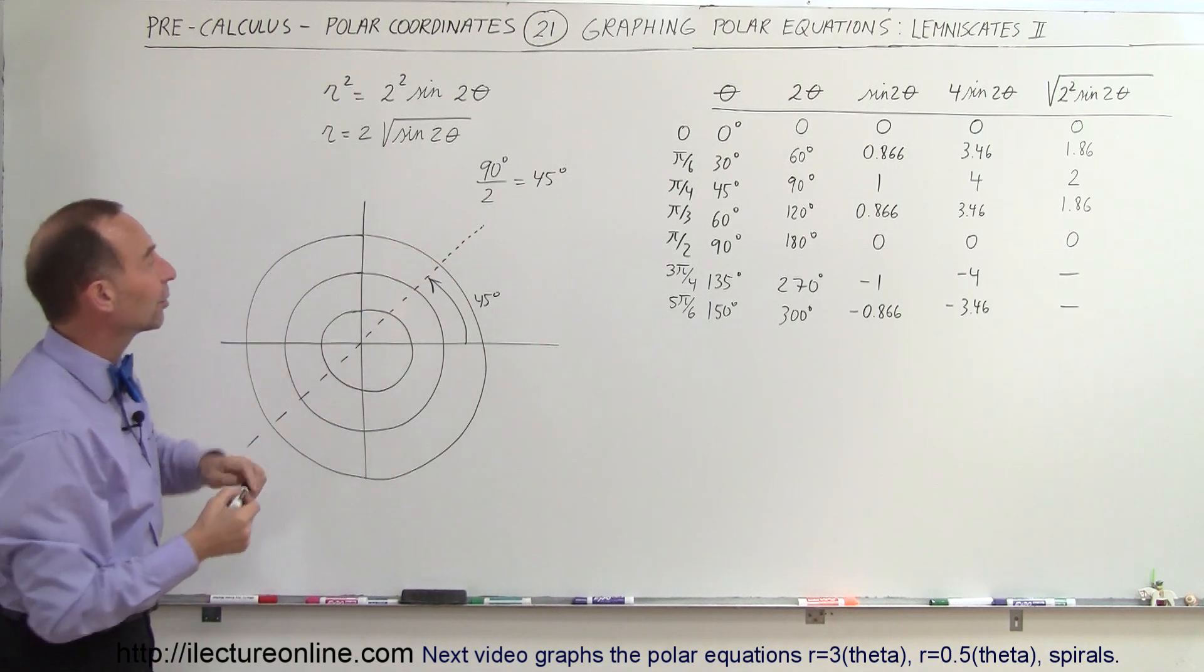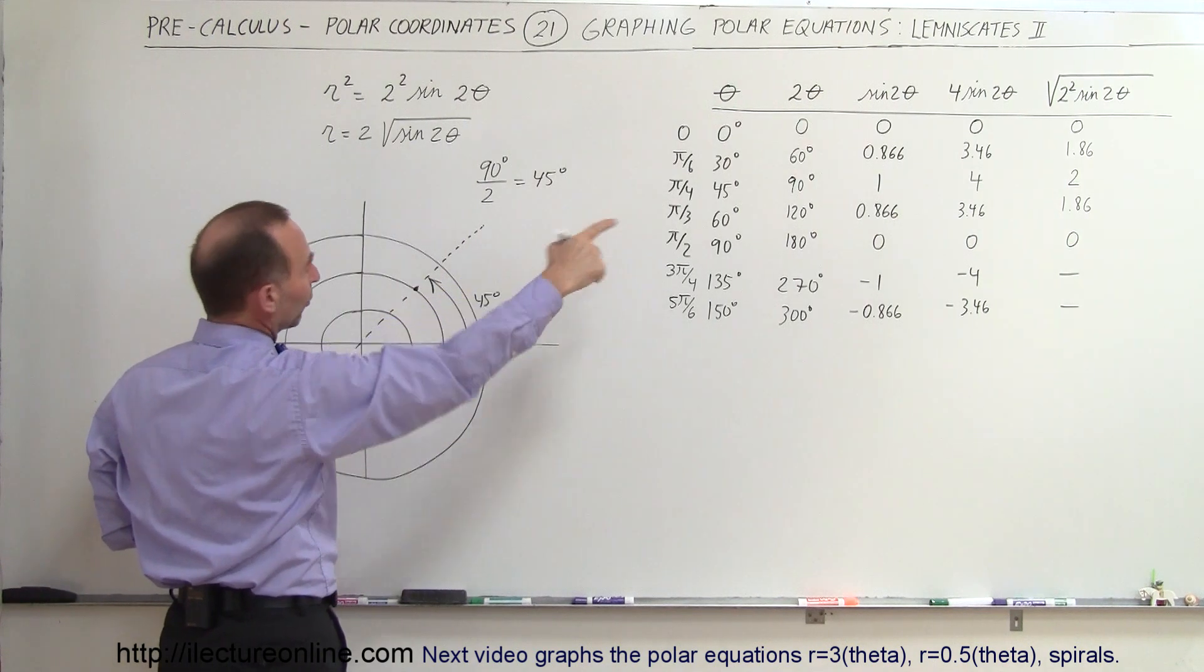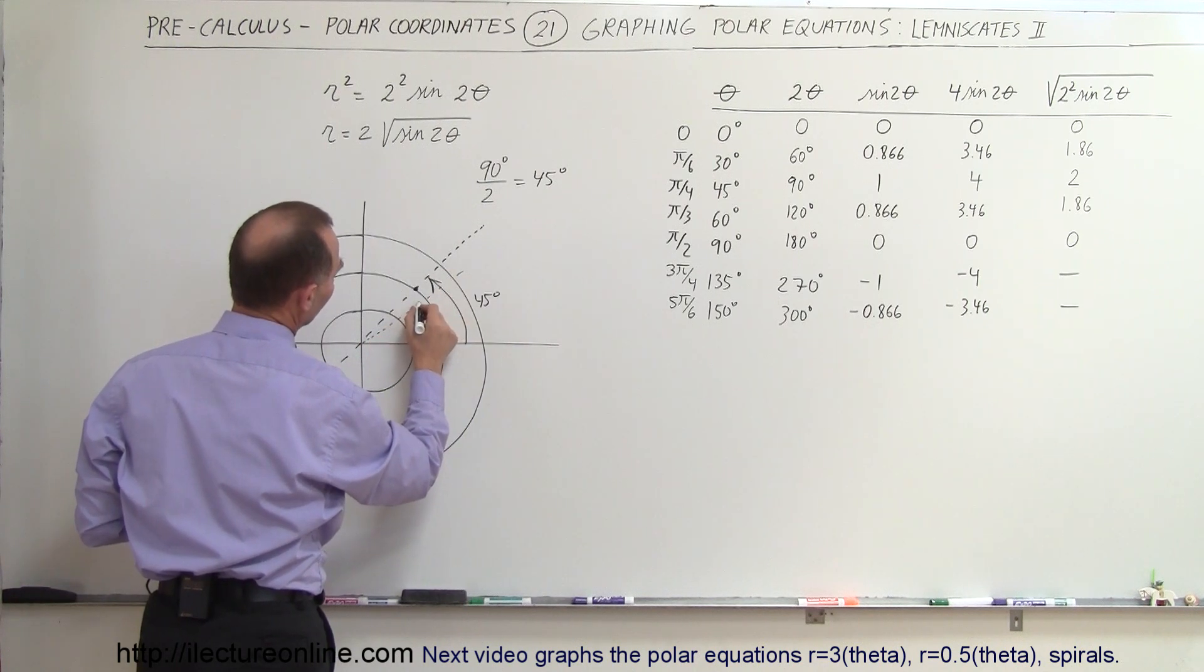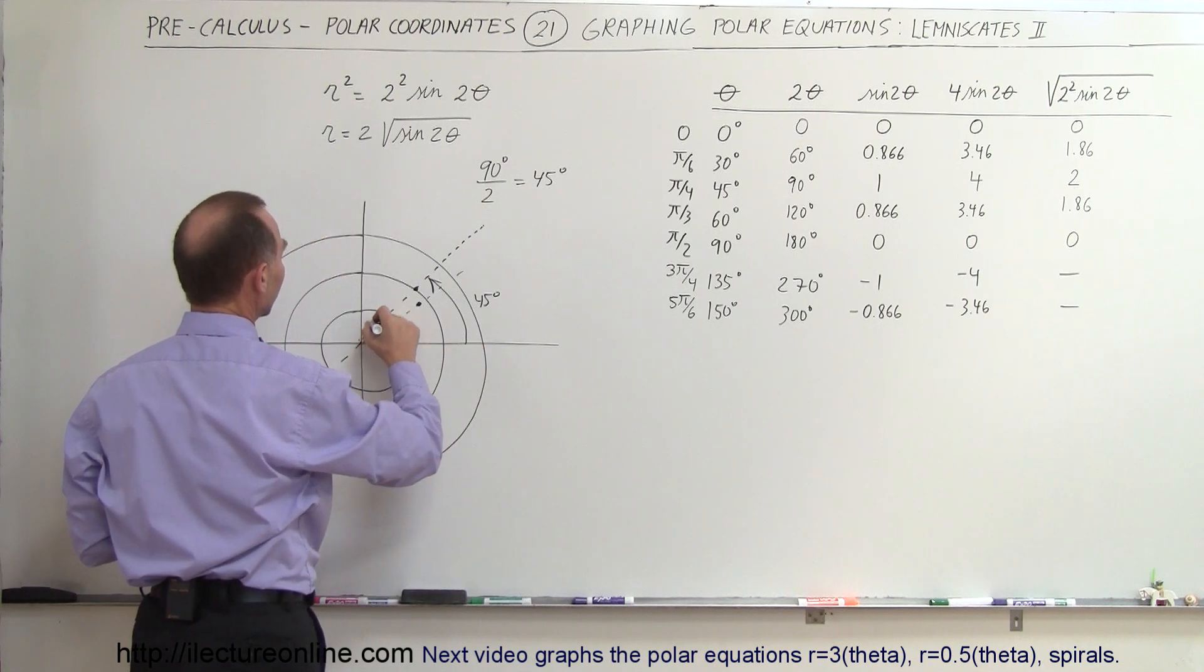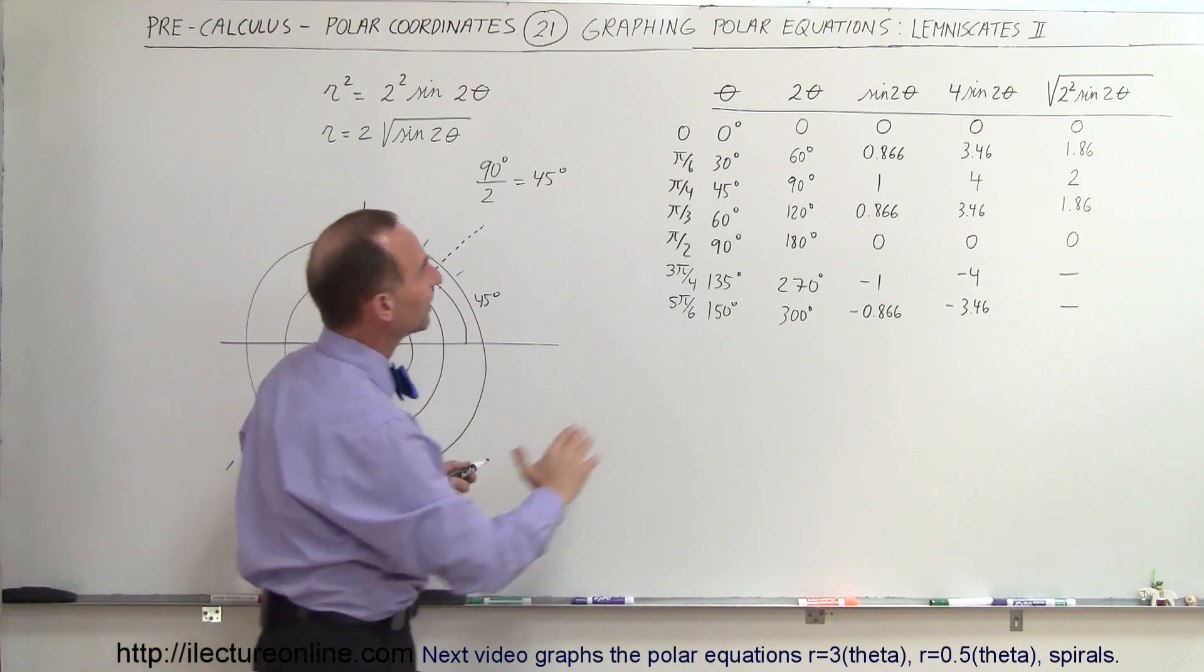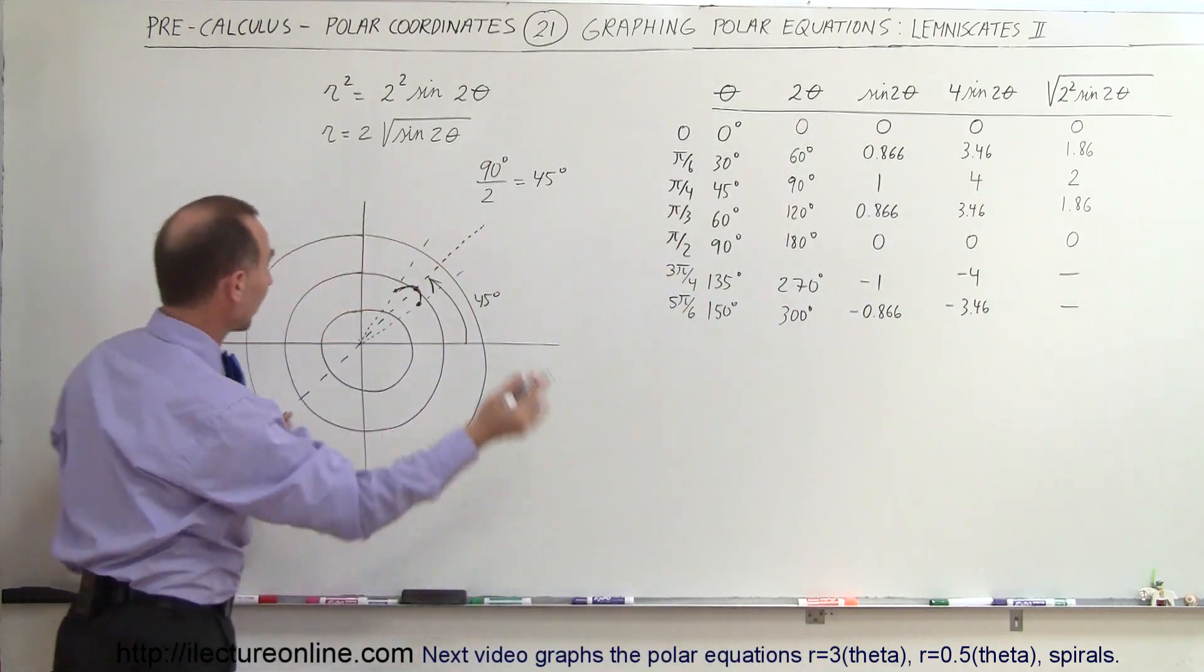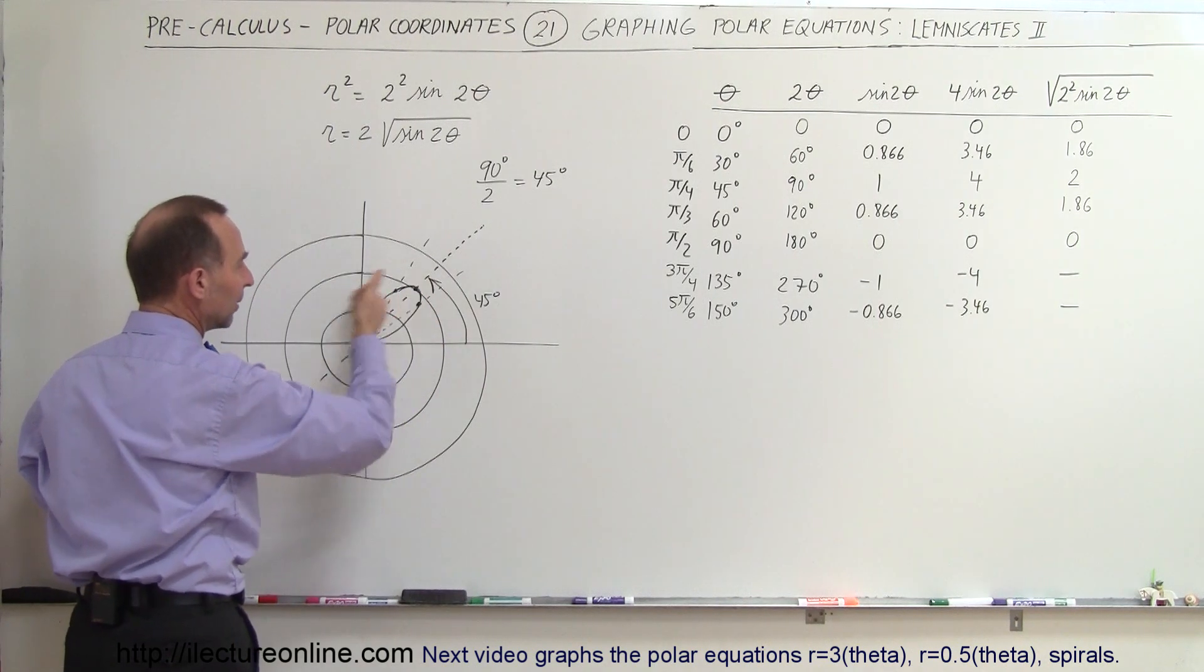Now notice r will be 2 when the angle is 45 degrees, so might as well put a point right there. When the angle is 30 degrees it's 1.86, so at 30 degrees, which is about this line right here, it's 1.86. At 60 degrees it's also 1.86, so we can draw the line at 60 degrees right here. You can see that this is going to look like that. Then we can see that at 90 degrees it is 0 and at 0 degrees it is 0, so now we can make the assumption that this will come in like this. At 90 degrees it's 0 and at 0 degrees it's 0 as well, so there's the first leaf of the lemniscate.